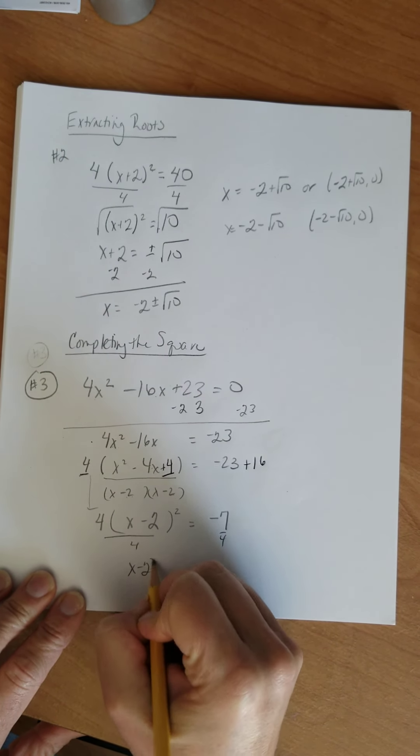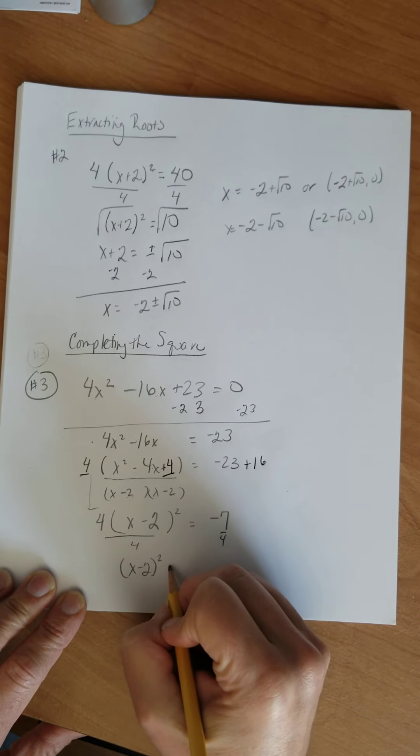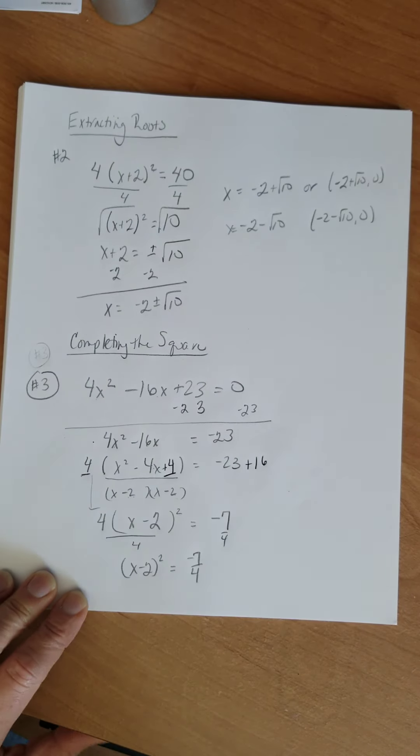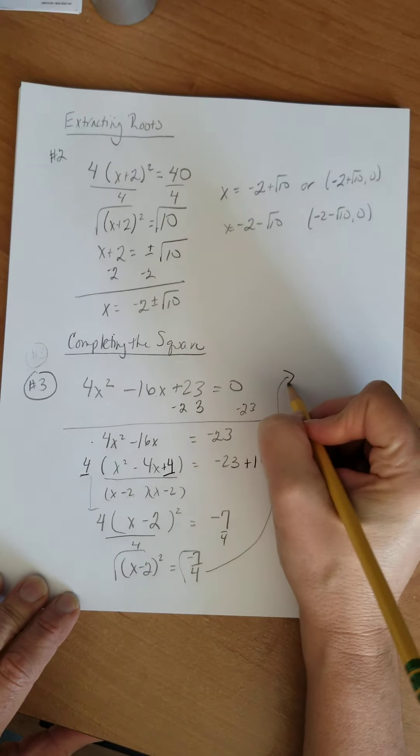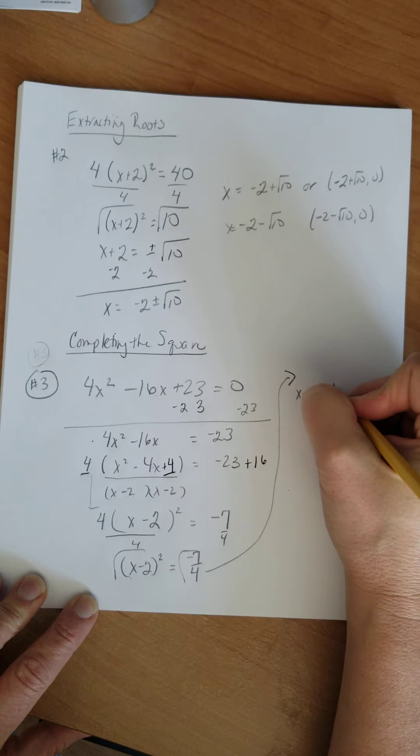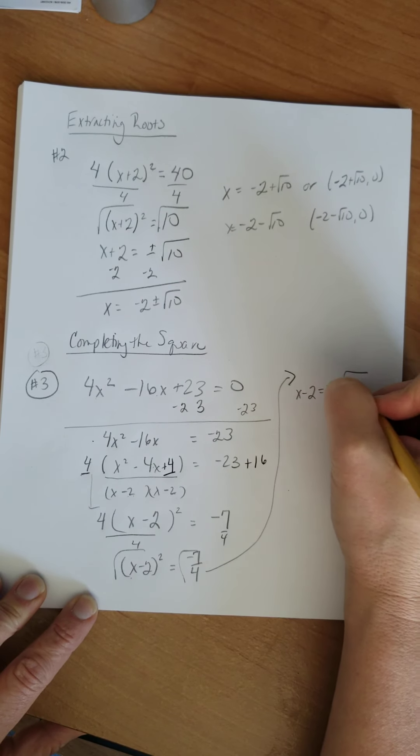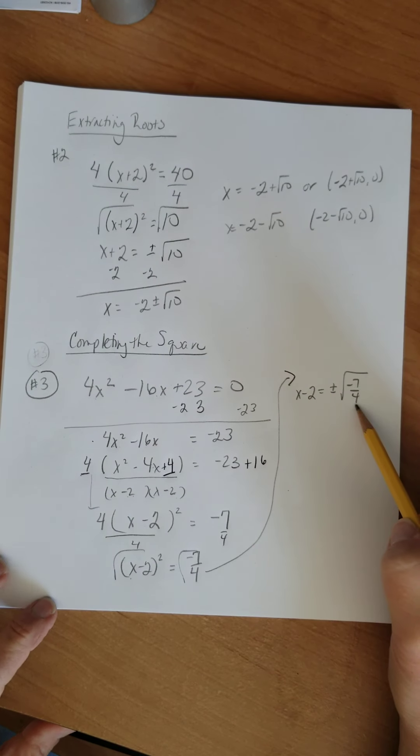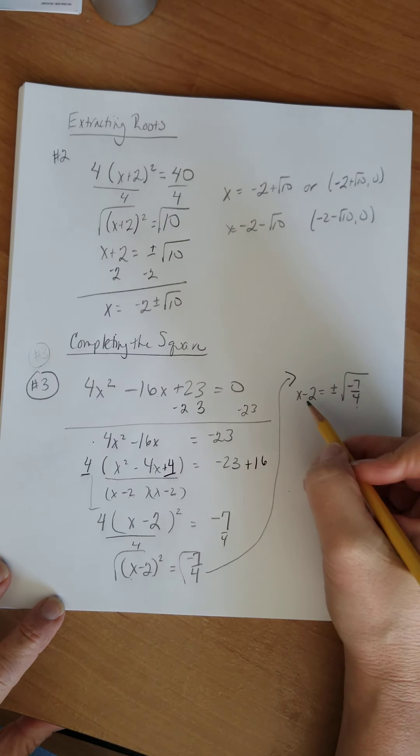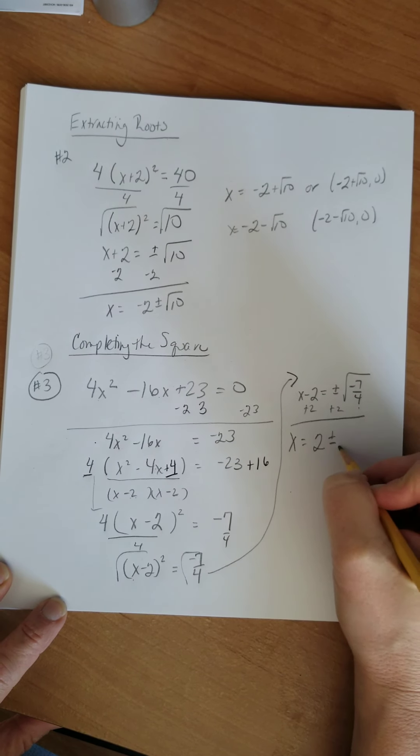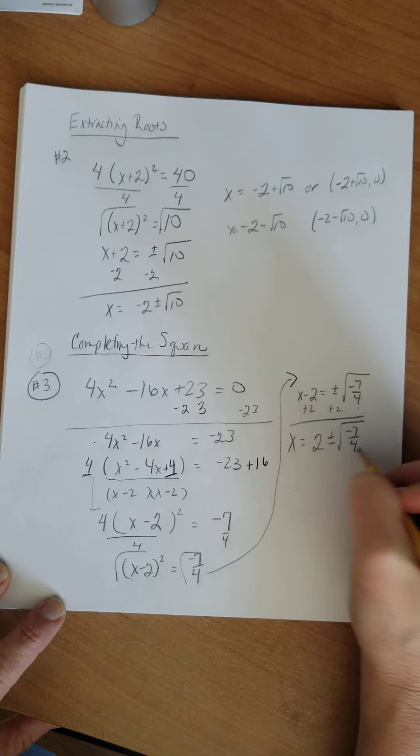So I'm going to have x minus 2 squared equals negative 7 fourths, right? All right, next thing I'm going to do is I'm going to take the square root of both sides and I'm going to actually bring it over on this side. The square root of x minus 2 squared is going to be x minus 2. That's going to equal plus or minus the square root of negative 7 fourths. All right, so there's a couple things going on right here. I'm actually going to add 2 first. Let's just finish this problem off and make this x equals 2 plus or minus the square root of negative 7 fourths.